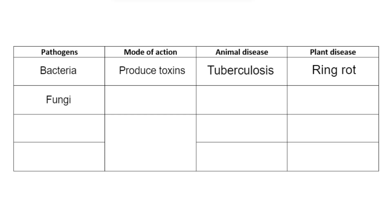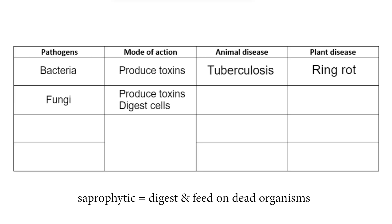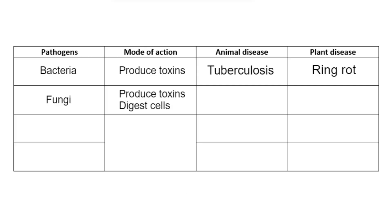There are two ways that fungi can actually make us ill. Similarly to bacteria, they can also produce toxins. Apart from that, fungi are also saprophytic organisms, meaning they can release enzymes to digest cells. As they digest the cells and their chemicals, it breaks them apart, causing a loss of cells and function.